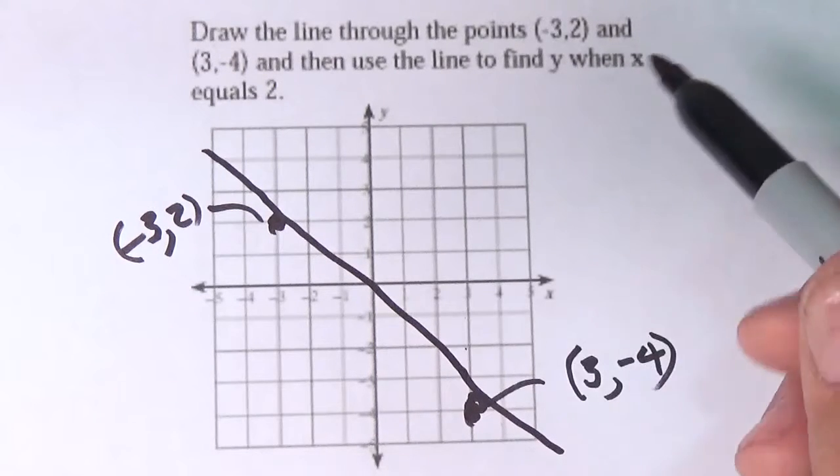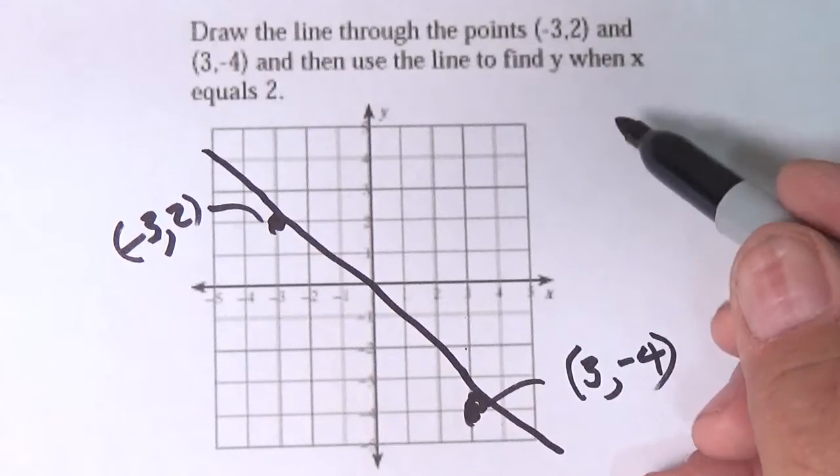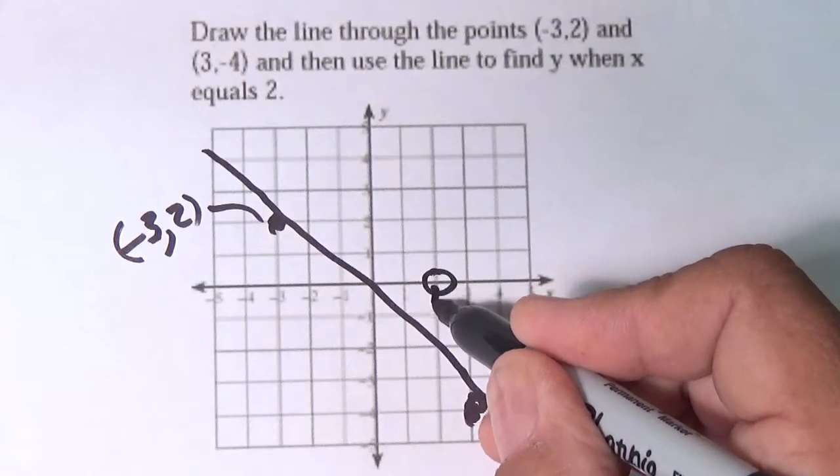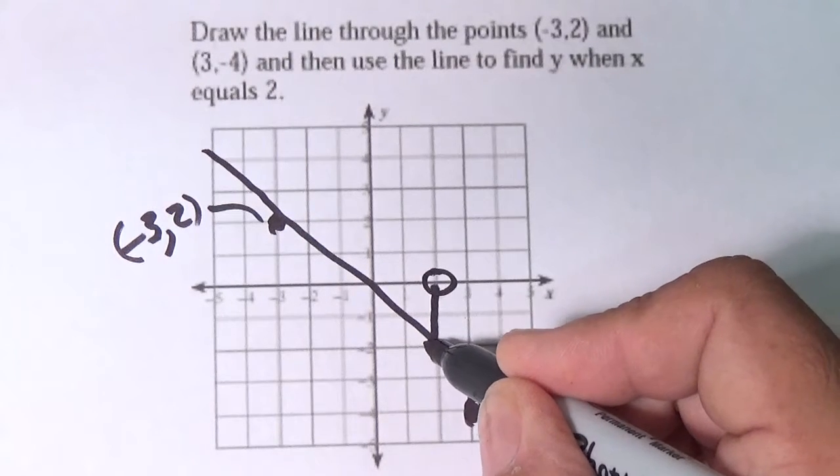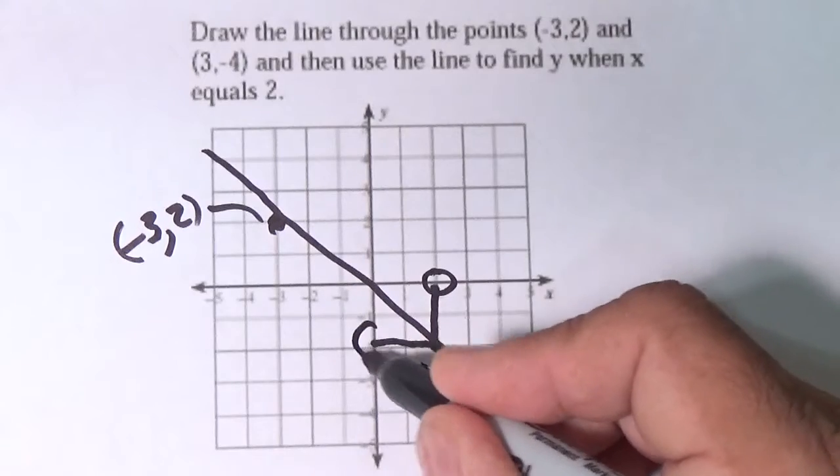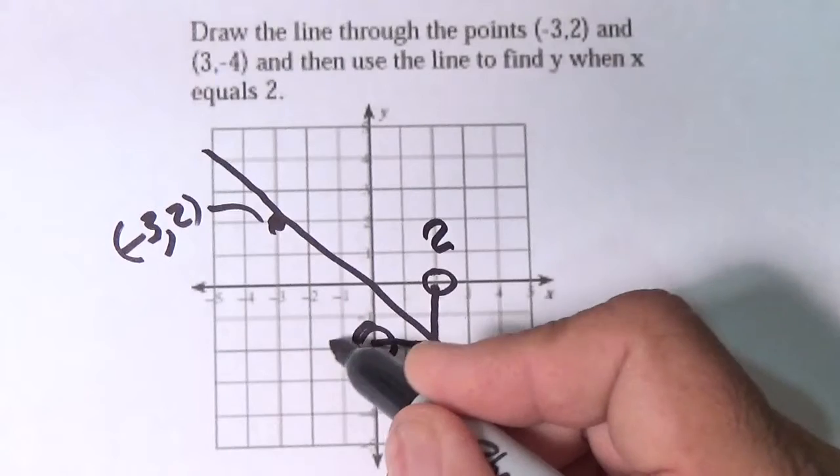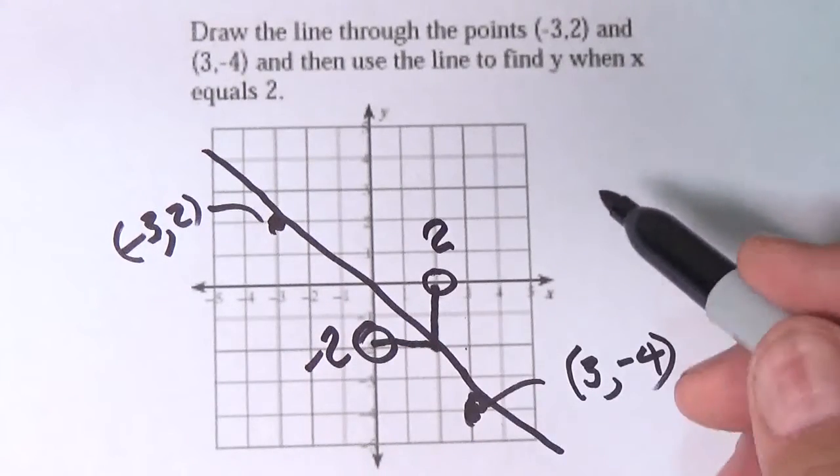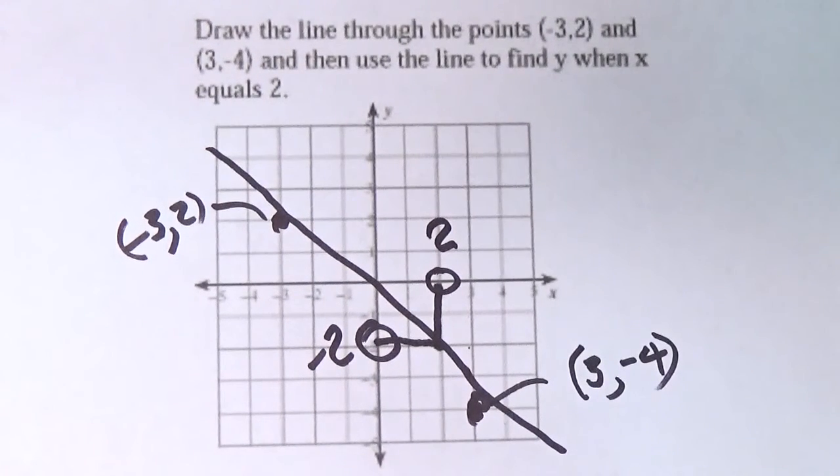And now, use this line to find Y when X equals 2. Here's X equals 2 right here. We come straight down and hit the line and then we go straight across to the Y axis and Y equals negative 2. So when X equals positive 2, Y equals negative 2. That's how we can figure this out. So what we've done is introduced you here to some of the beginning ideas of how this graphing business works.